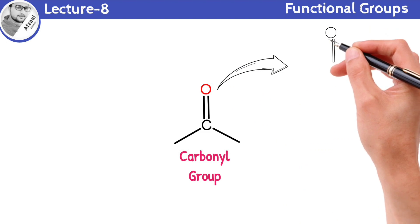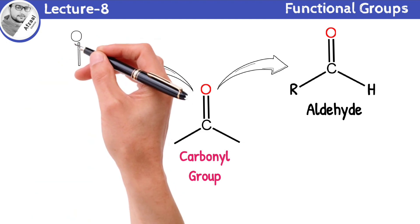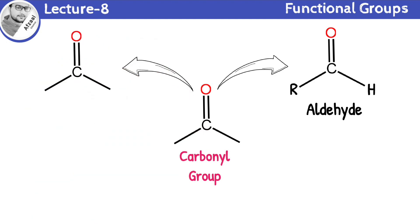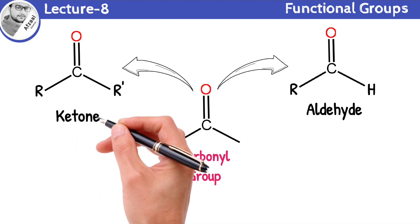If hydrogen is connected on one side of the carbonyl group and the other side is bonded with alkyl radical, then the compounds are known as aldehydes. If carbonyl group is present in the middle position and both sides of the carbonyl group are connected with alkyl groups, then the compounds are known as ketones.